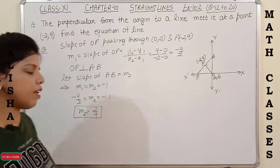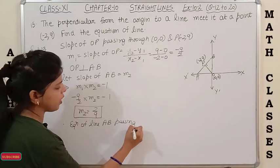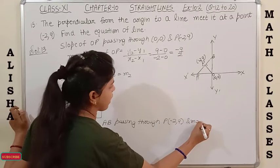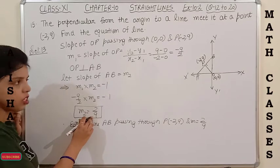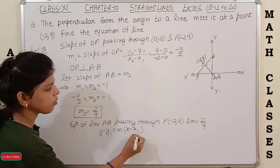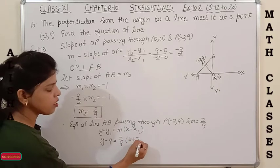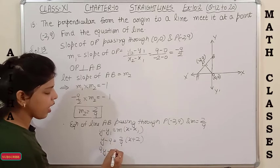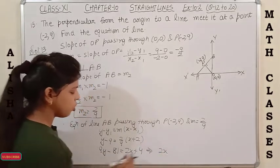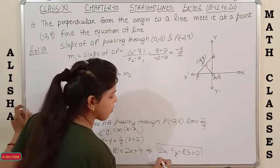Equation of line AB passing through (−2, 9) with slope 2/9: y − 9 = (2/9)(x − (−2)). Cross-multiplying: 9y − 81 = 2x + 4. Rearranging: 2x − 9y + 85 = 0. This is the required equation.